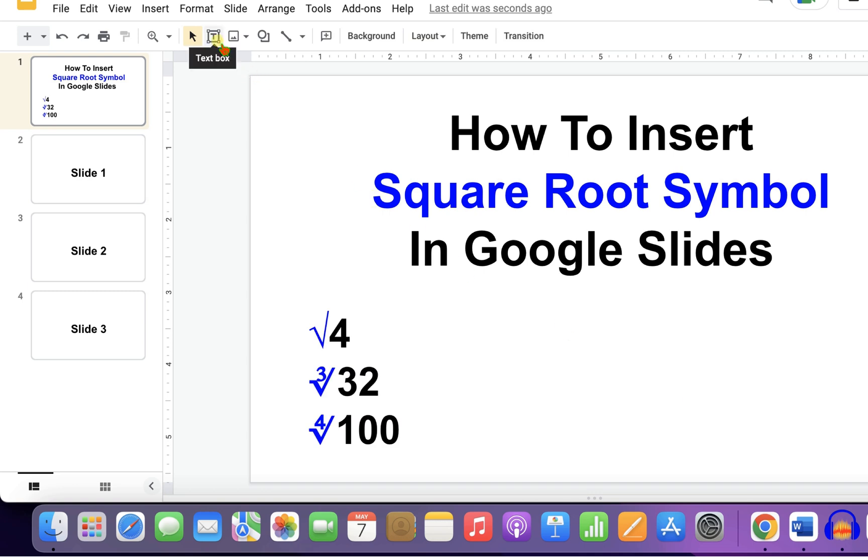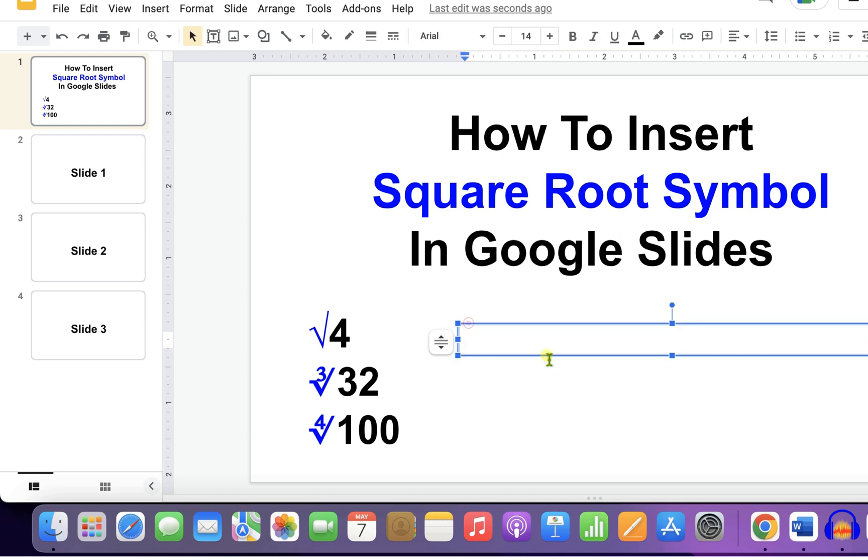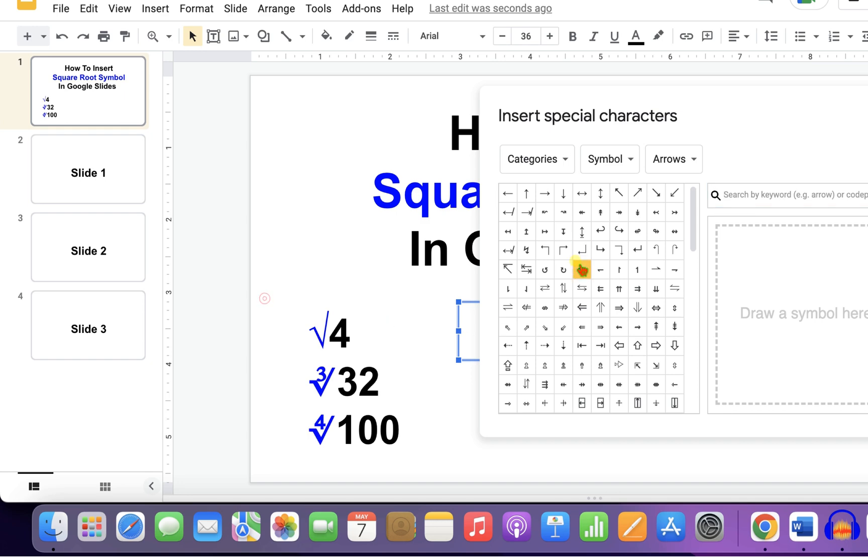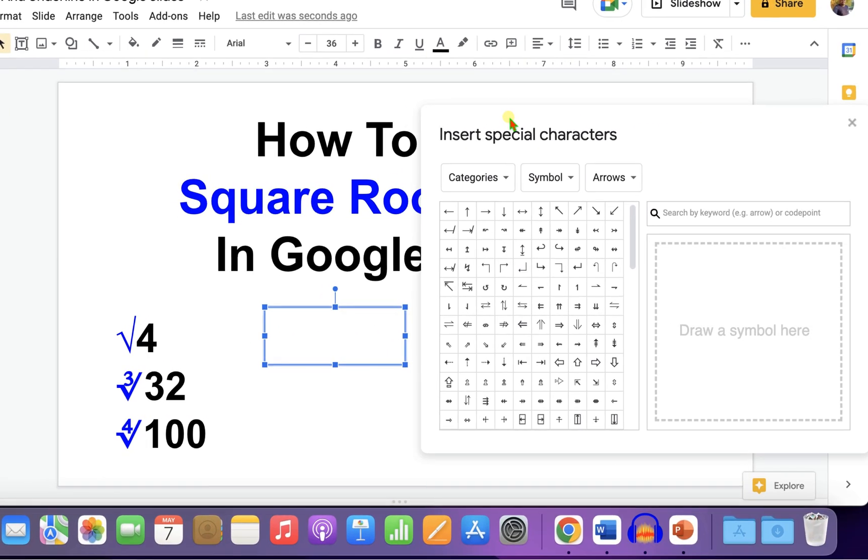First, click on the text box option and insert a text box in the Google Slides. Now, click on the insert tab and click on special characters to open the special characters window.